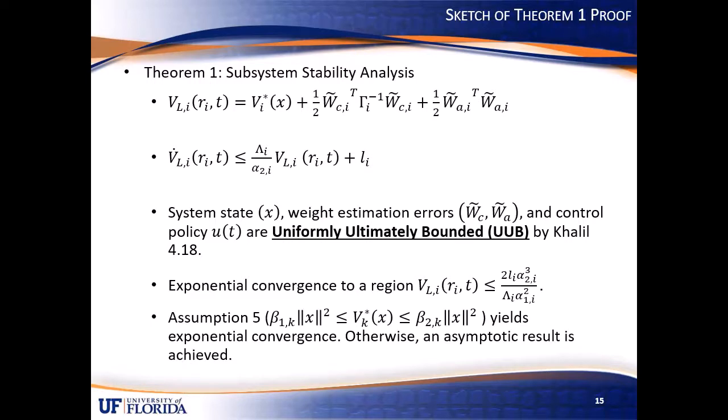The first theorem in the paper shows that with the previous assumptions, the Lyapunov function of each subsystem will exponentially converge to a defined region. More specifically, the state x, actor and critic weight estimation errors, and control policy u are uniformly ultimately bounded, or UUB. This result has been well studied, but what's important here, what should we take away, is that both the size of the UUB region and the exponential decay rate are quantifiable.